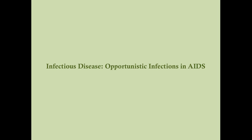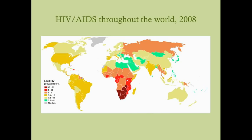Opportunistic infections are one of the major hurdles when dealing with advanced stage HIV or AIDS patients. HIV and AIDS is a global problem — this map shows prevalence ranging from zero to over 50 percent of the population. While HIV is considered a problem in the United States, only about 0.5 to 1 percent of the population is infected.